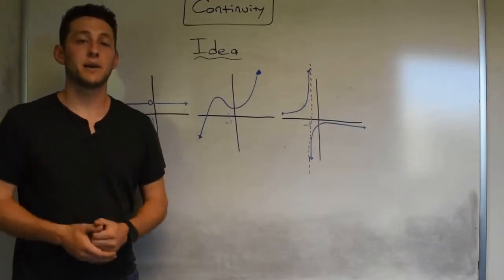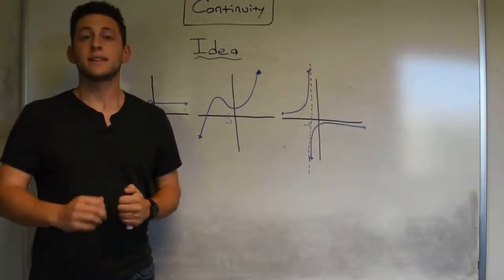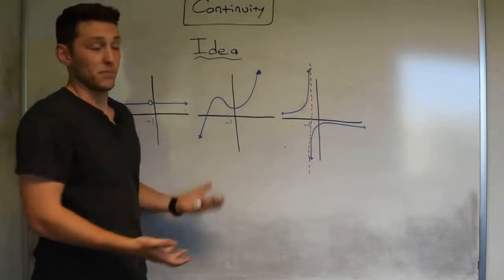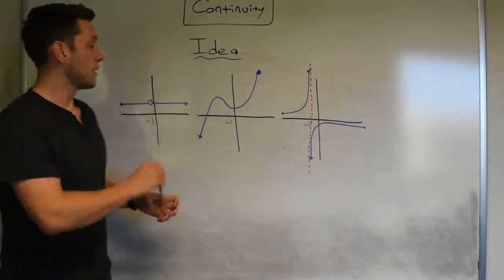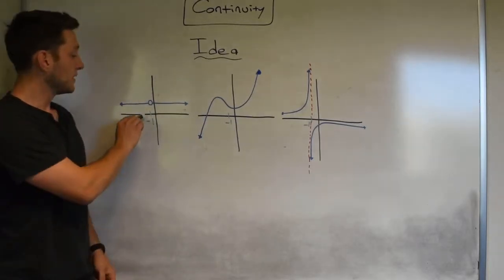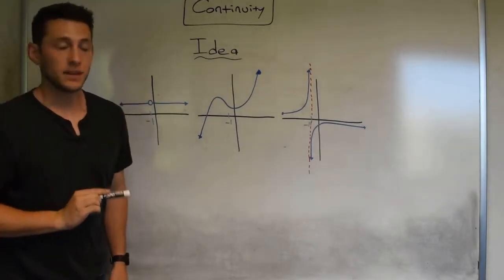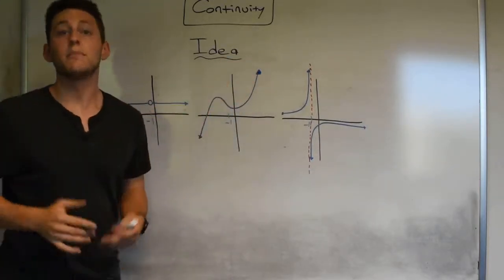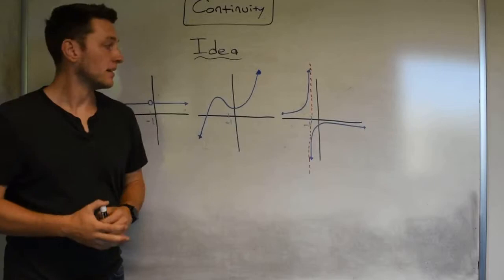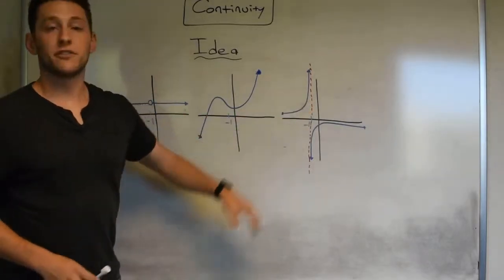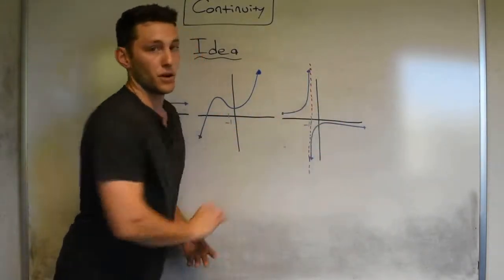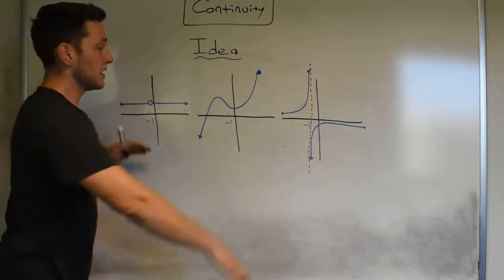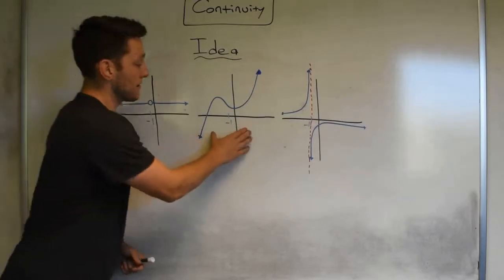Now let's talk about the idea behind what makes a function continuous. Behind me you can see three different examples of three different functions that also somewhat look pretty different. In the first example at negative one it looks like I have a hole. In the second example, nothing really up with it — it just seems kind of like a smooth function, maybe a shift of x cubed. And last but not least, the third function has a vertical asymptote at negative one.